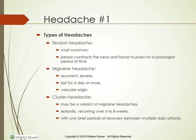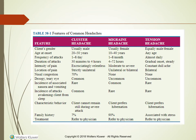A cluster headache can be a variant of a migraine and is episodic, recurring over six to eight weeks. These are excruciating, severe unilateral headaches with pain that usually peaks in ten minutes and lasts up to three hours. The orbital, supraorbital, and temporal regions are the usual sites of pain. They're called cluster headaches because they occur several times per day in clusters, followed by a period of remission. Symptoms can include rhinorrhea, teary eyes, constricted pupils, and drooping eyes.